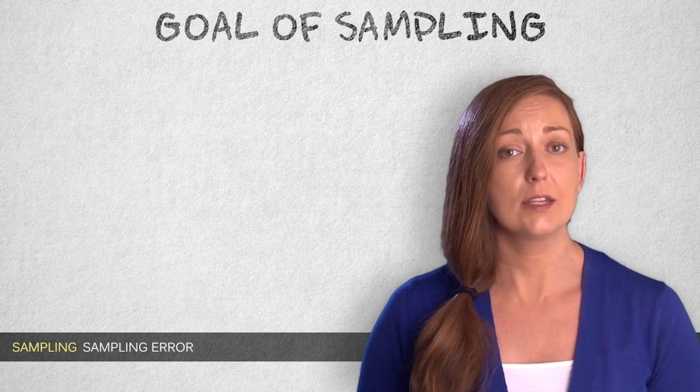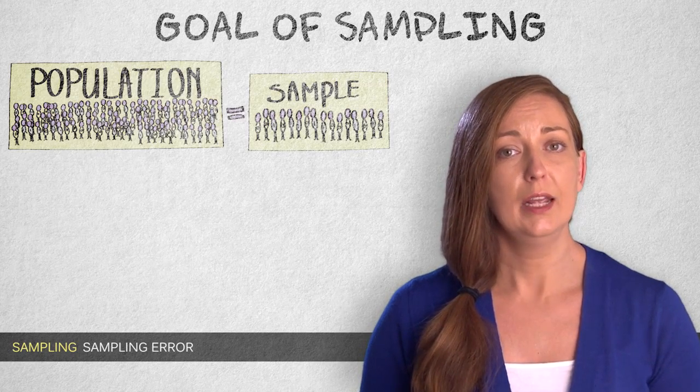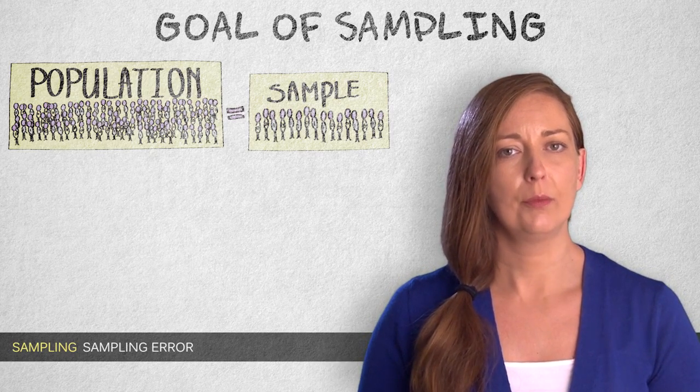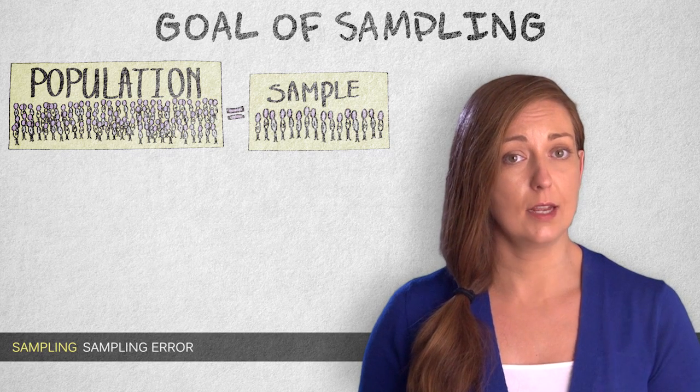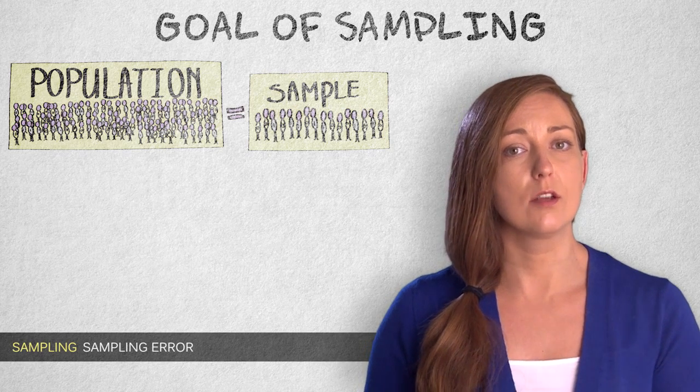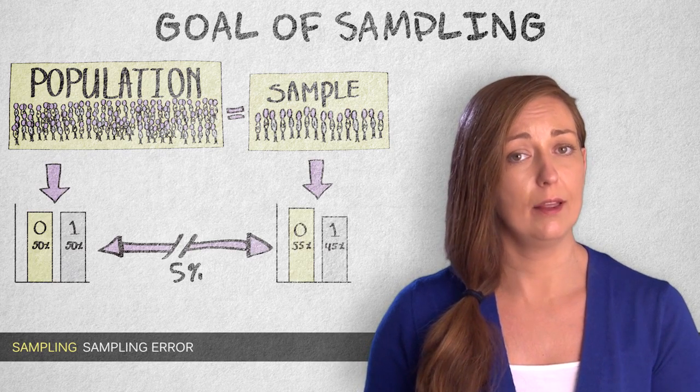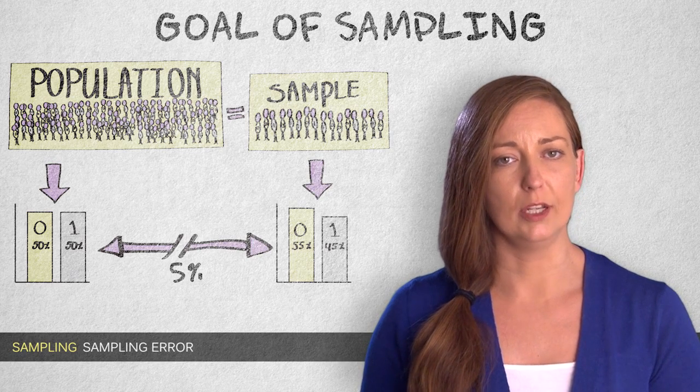The goal of sampling is to estimate a value in the population as accurately as possible. But even if we use the most advanced sampling methods, there will always be some discrepancy between our sample value, the estimate, and the true value in the population.